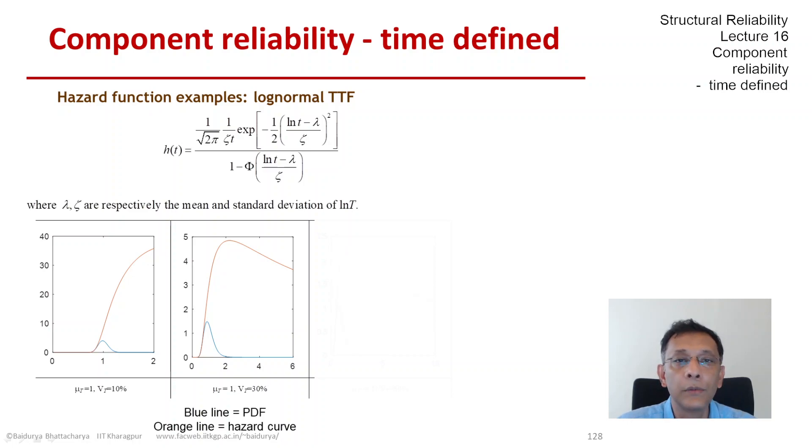Otherwise, some other time to failure distribution should be preferred. And this behavior is even more pronounced when we have an even larger COV. Here you see 50% COV and you see the more pronounced behavior of first increasing and then decreasing failure rate.